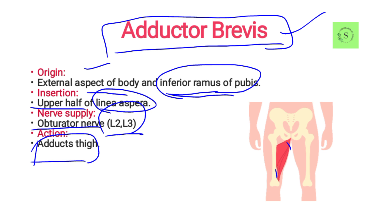Its nerve supply is the obturator nerve, and its action is to adduct the thigh. All adductors are supplied by the obturator nerve, and their action is to adduct the thigh.